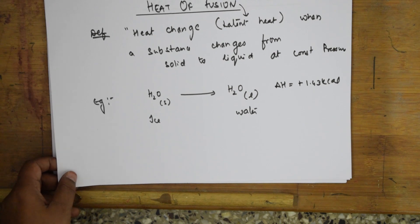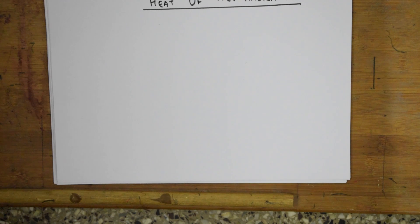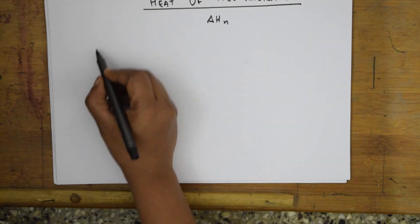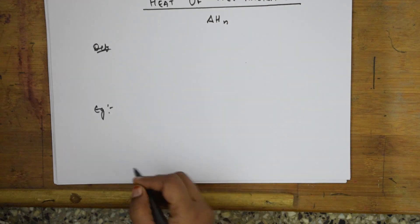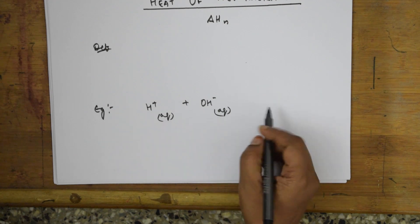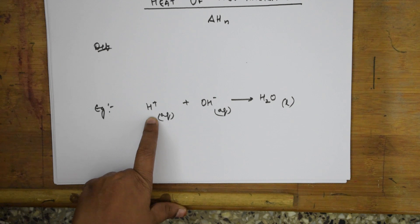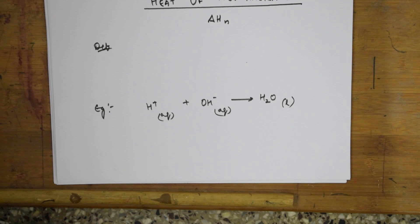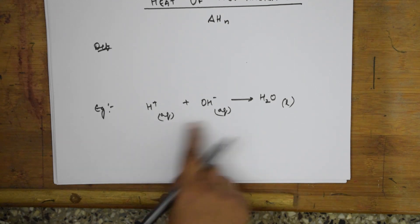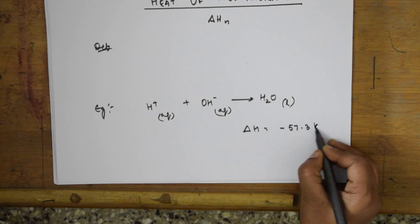Next is heat of neutralization. In Grade 11 we studied the neutralization process — the reaction between acid and base, denoted delta H(N). For example: H⁺ ion in aqueous state plus OH⁻ ion in aqueous state gives water in liquid state. During this process, delta H = minus 57.3 kilojoules per mole, meaning energy is released.